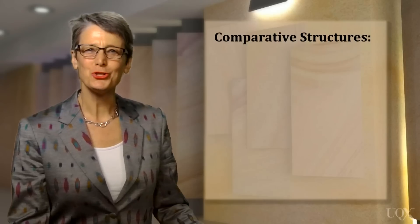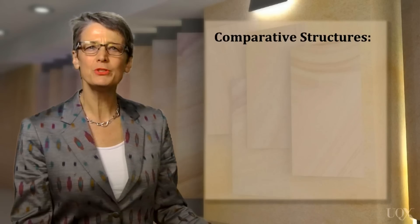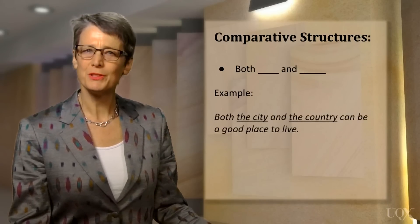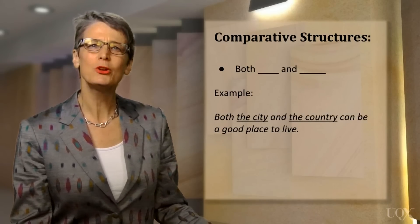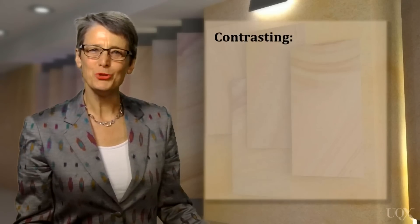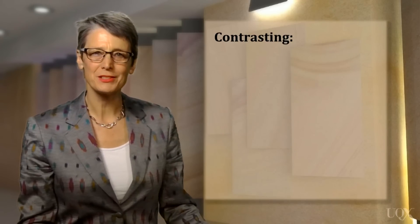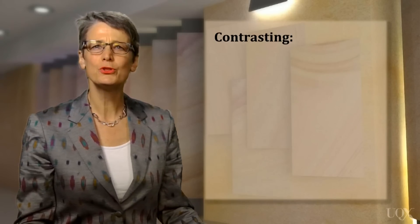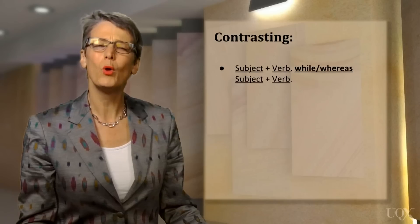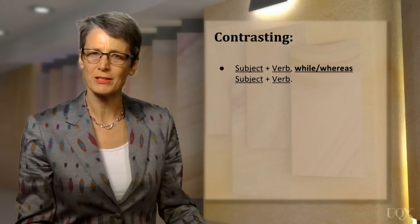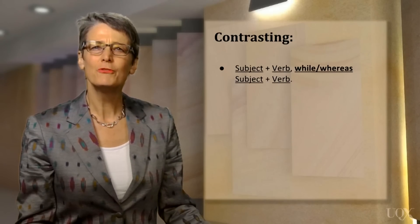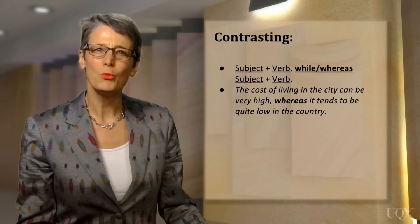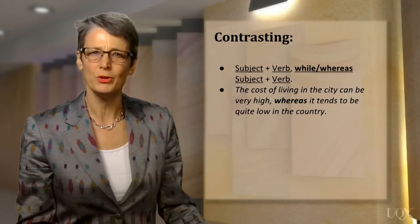You can also show similarity between two things by using the word 'both'. For example: 'Both the city and the country can be a good place to live.' When talking about differences between two things, you can use the words 'while' or 'whereas' to connect two contrasting statements. For instance: 'The cost of living in the city can be very high, whereas it tends to be quite low in the country.'